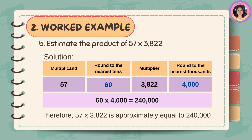Estimate the product of 57 times 3,822. The multiplicand is 57; round to the nearest tens is 60. The multiplier is 3,822; round to the nearest thousands is 4,000. 60 times 4,000 is equal to 240,000. Therefore, 57 times 3,822 is approximately equal to 240,000.